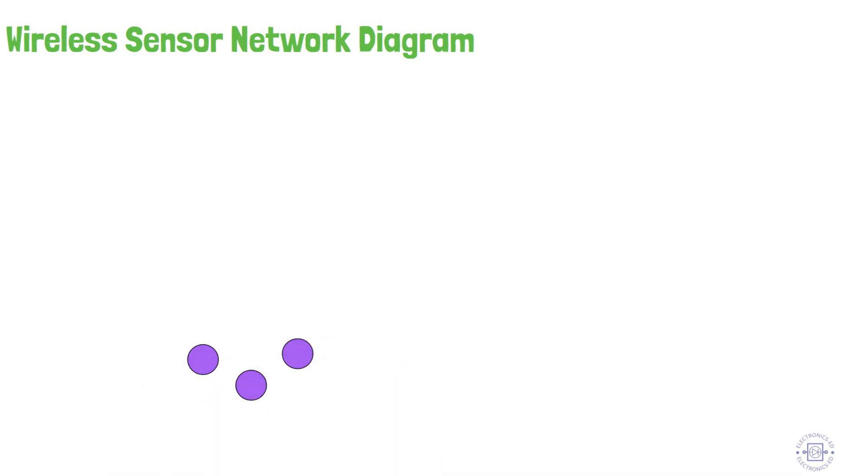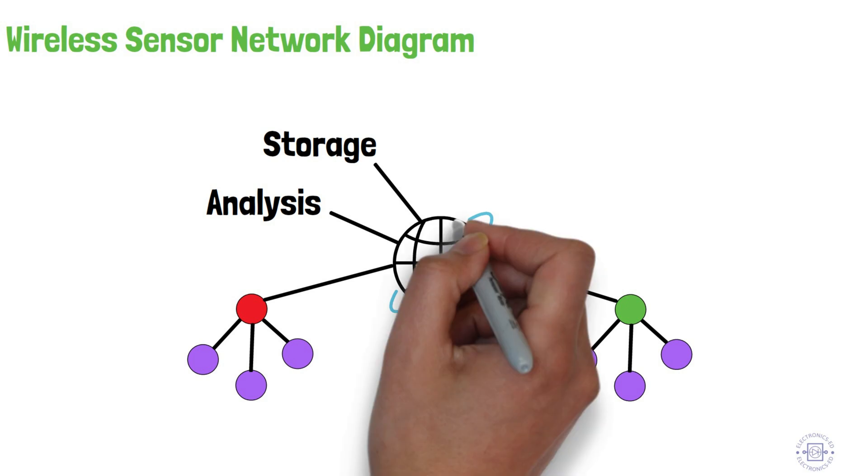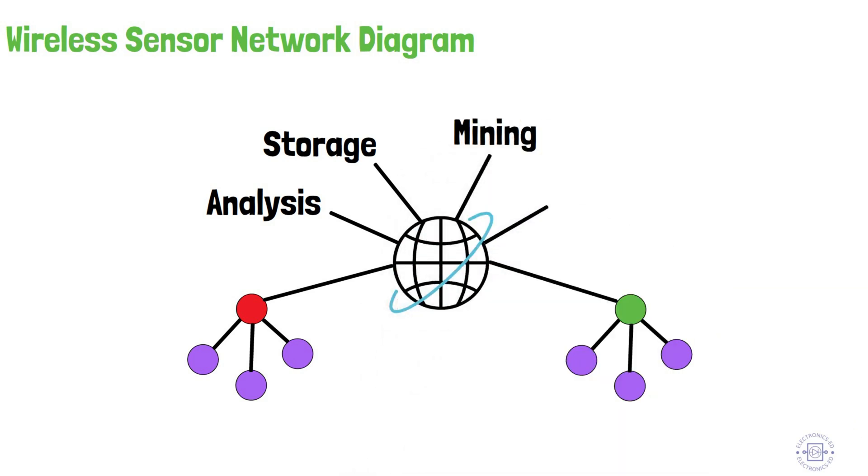First, we have sensor nodes which are connected to base stations. The base stations are further connected to the internet. From the internet, we can perform processes such as data analysis, data storage, data mining, or data processing.